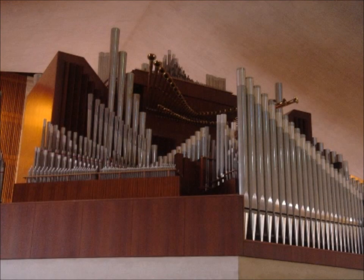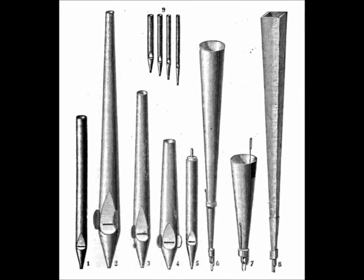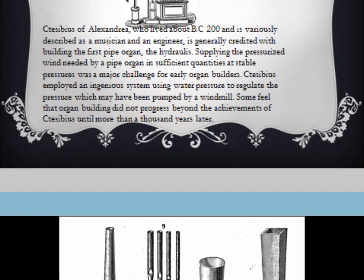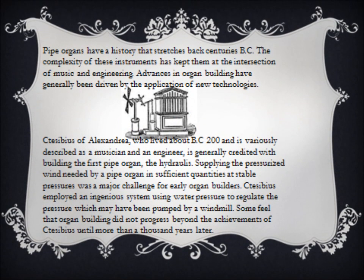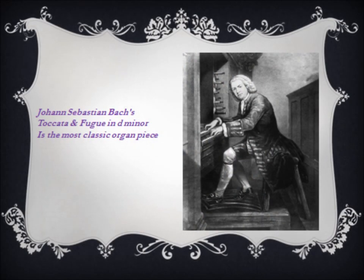A pipe organ is a musical instrument that produces sound by air vibrations created in an organ pipe, which is controlled by a musician from a keyboard. Pipe organs have a history that stretches back centuries BC. Organs were developed very fast in the Middle Ages and gradually became the most widely used instrument during the 16th and 17th century. The organ is sometimes described as the king of all instruments.